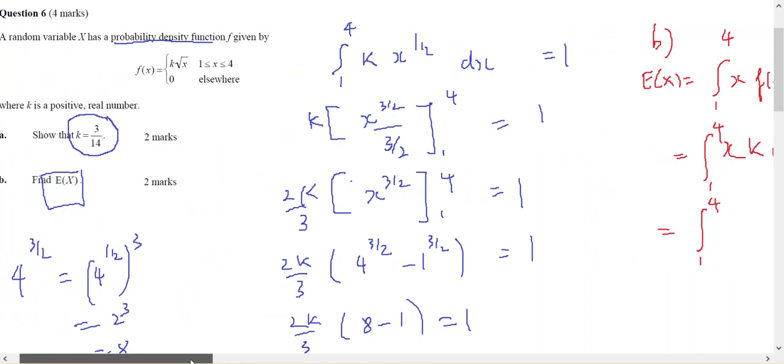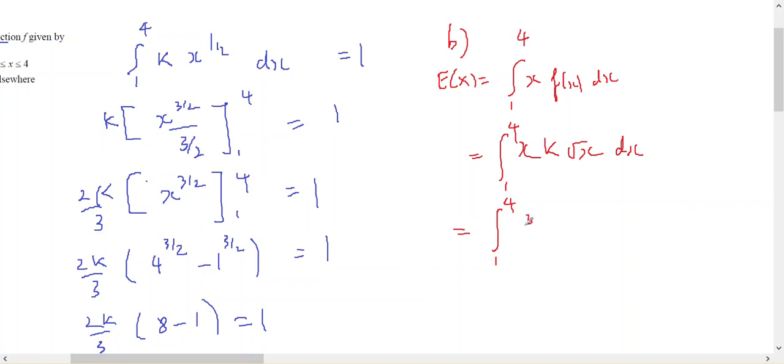what was k again? 3 on 14, x times the square root of x is x times x to the half, which is x to the 3 on 2 dx,